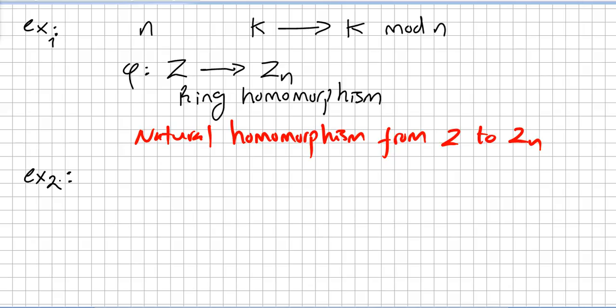Another example. For instance, if you are mapping A+Bi into A-Bi, this is a ring isomorphism from complex numbers to complex numbers. You can check that.